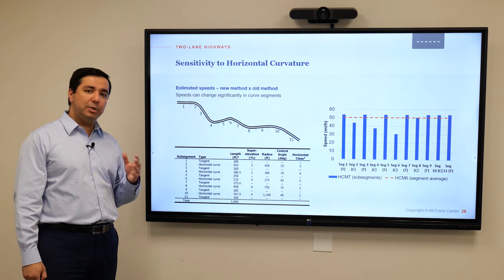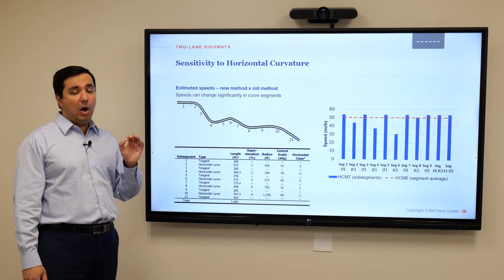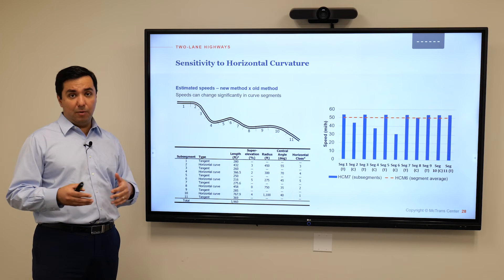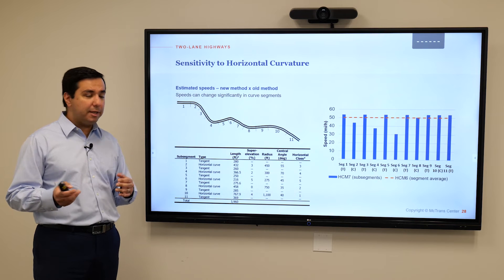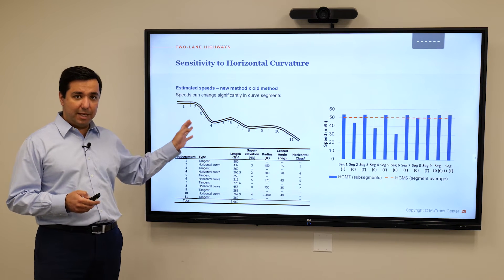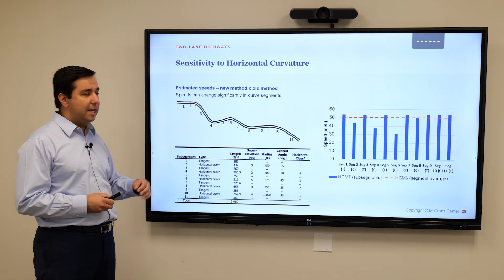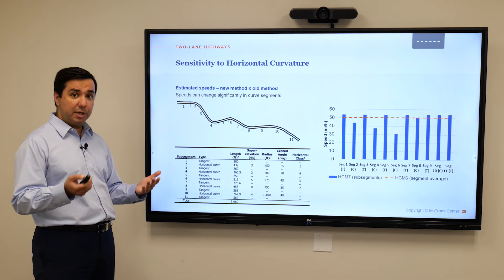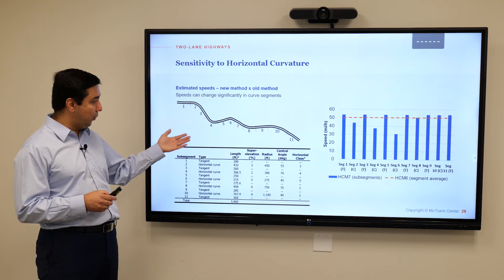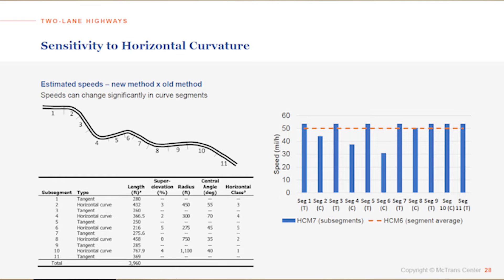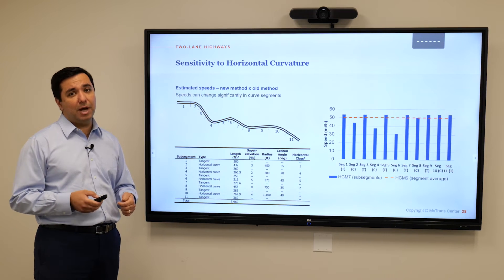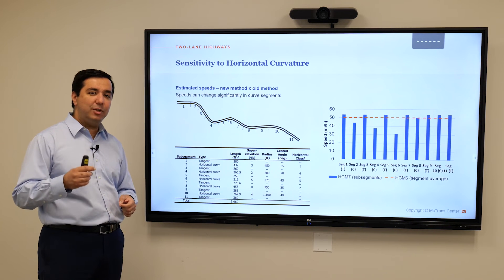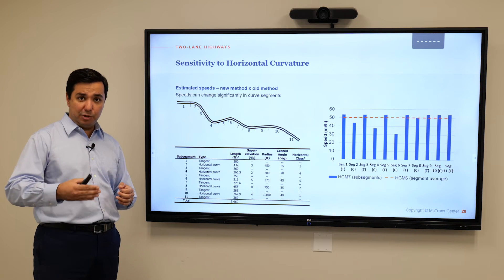One great addition to the new method is that we are able to divide segments into sub-segments, whether we are dealing with curved segments or not. We can perform that segmentation again on top of segments — we call these sub-segments. Sub-segments can be either tangent or horizontal curve depending on the curvature of the roadway. Speed estimation is done at the resolution of every sub-segment: for straight tangent sub-segments we expect higher speeds, and when dealing with curves we estimate lower speeds.